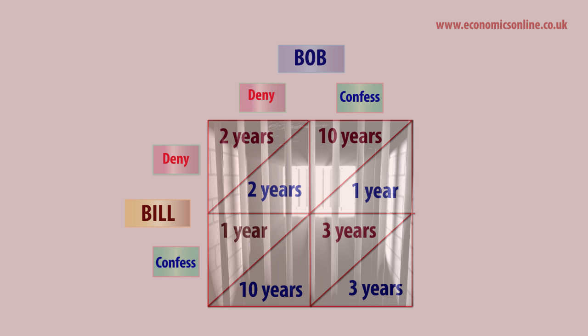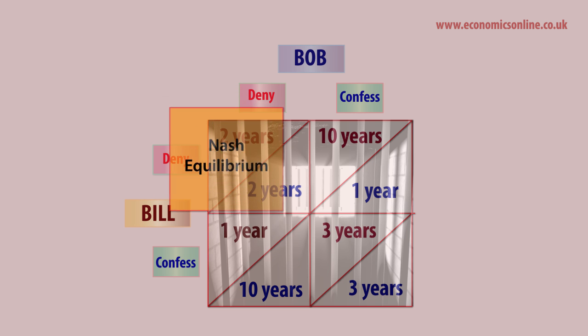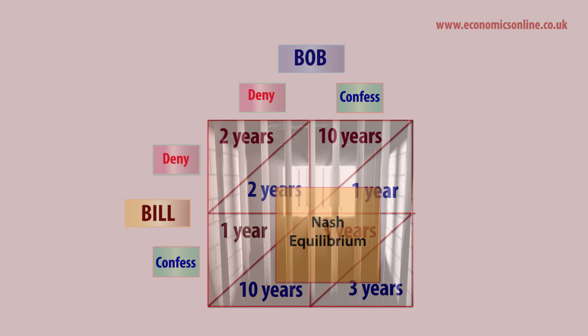Confessing is also the Nash equilibrium, named after Nobel Prize-winning economist John Nash. Nash equilibrium occurs when any change of decision by a player makes that player worse off, taking into account the action of the other. Once having confessed, prisoners will carry on confessing.